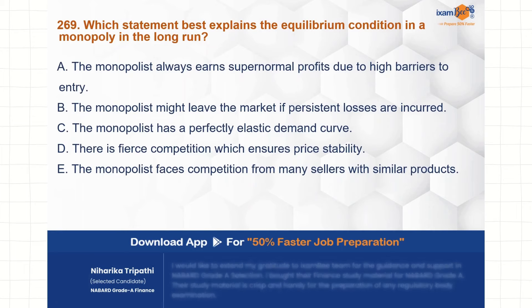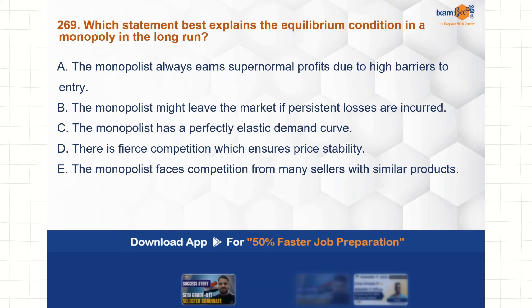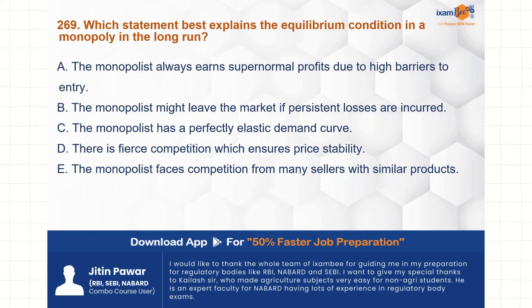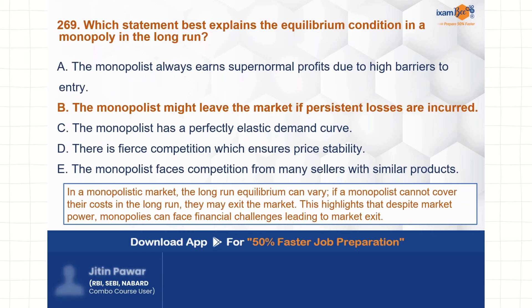Which statement best explains the equilibrium condition in monopoly in the long run? The options discuss supernormal profits, barriers to entry, perfectly elastic demand, fierce competition, and competition from many sellers. Option B is correct: the monopolist might leave the market if persistent losses are incurred.